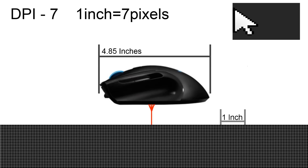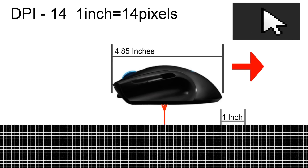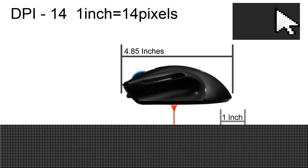Now let's double the sensitivity. There are now 14 dots per inch. So this time when we move the mouse 1 inch, it will register as moving 14 pixels on our monitor or TV.